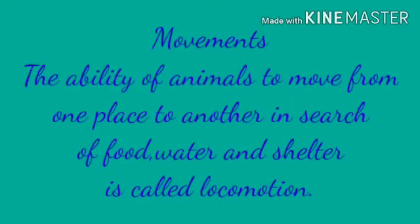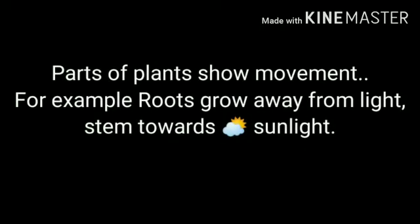The first characteristic difference is movement. The ability of an animal to move from one place to another in search of food, water and shelter is called locomotion. It is absent in plants. Then how do plants show movement?